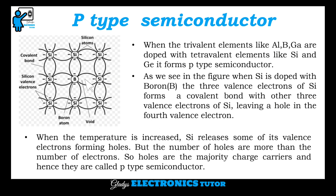In the fourth valence position, there is a hole. When the temperature is increased, silicon releases some of its valence electrons forming holes. But the number of holes is more than the number of electrons. So holes are the majority charge carriers, and hence they are called P-type semiconductor.